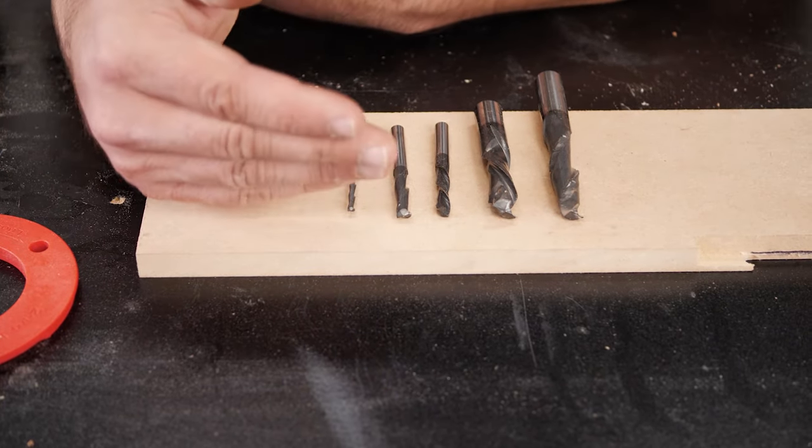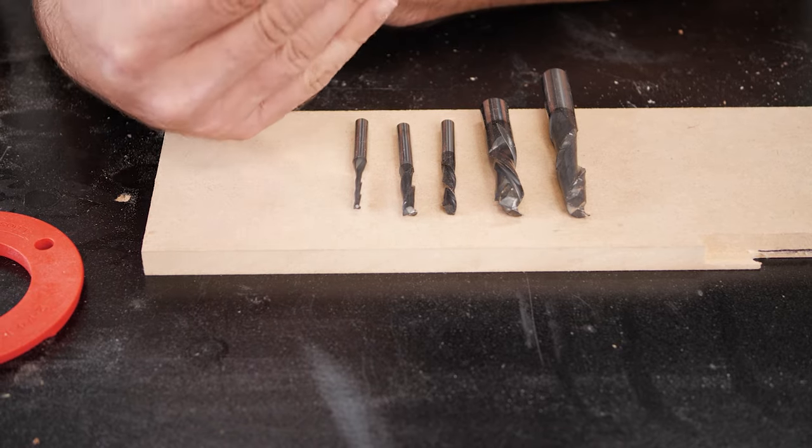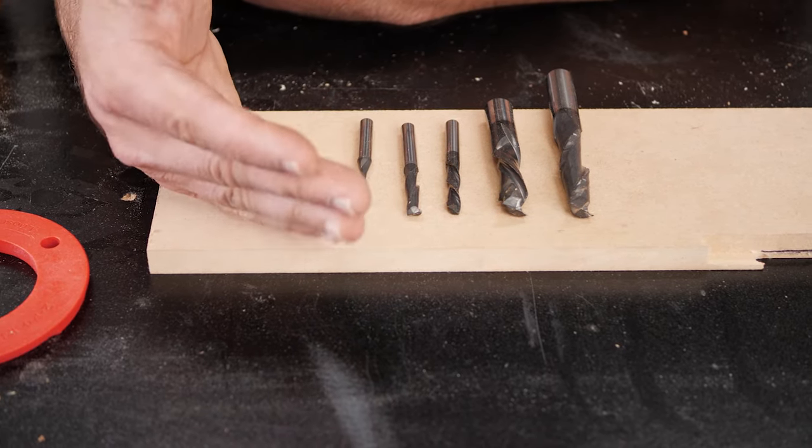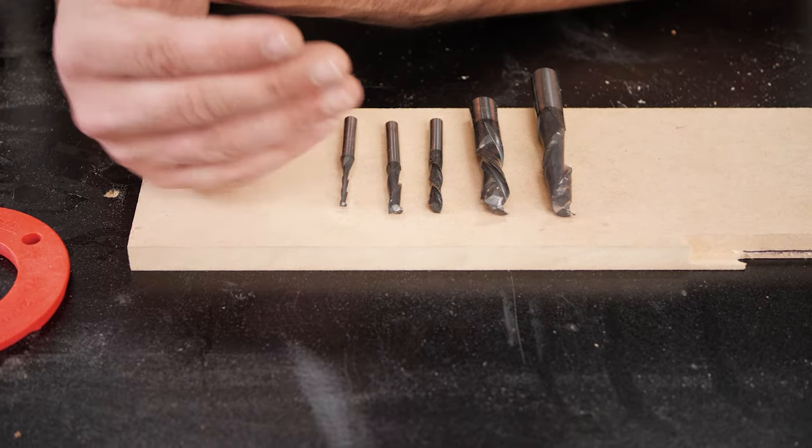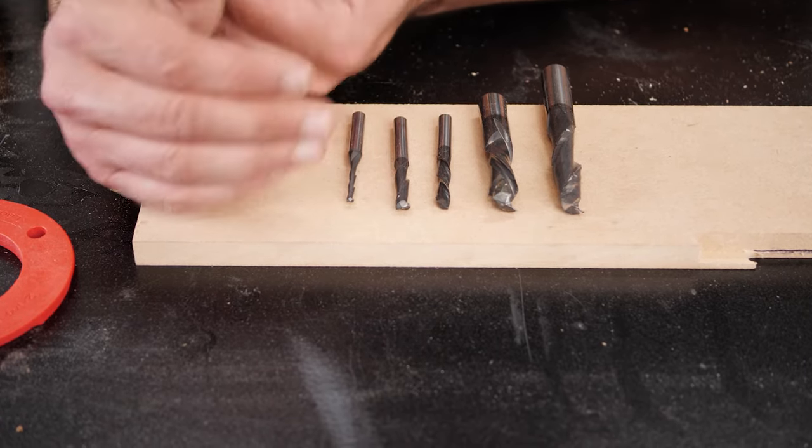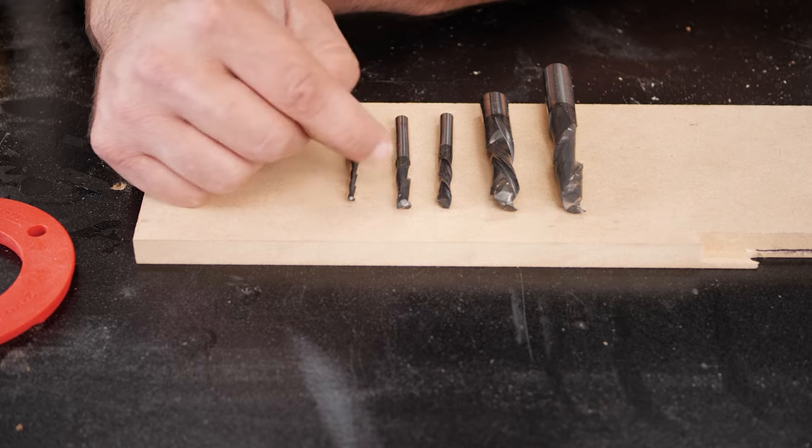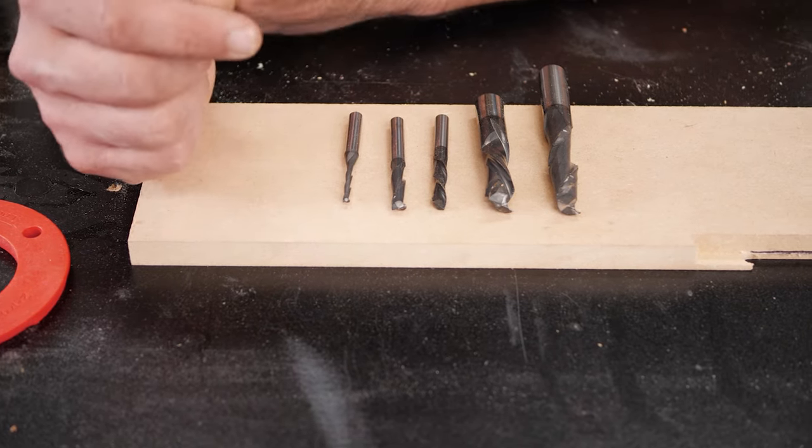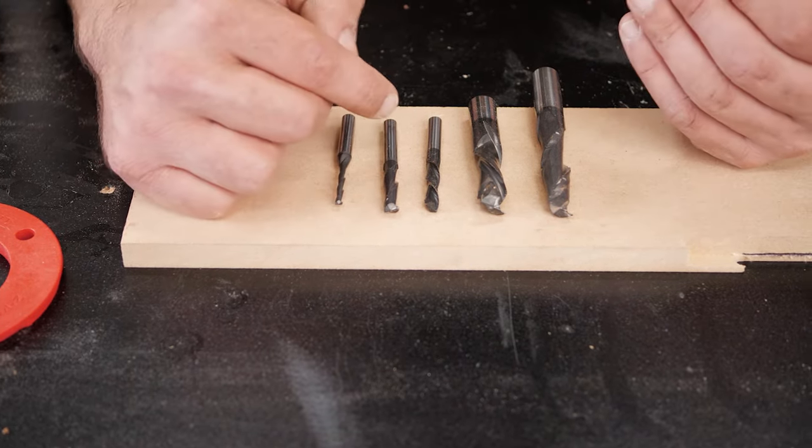Spiral bits clear chips out of the cut. One of the causes of burning when you're cutting a dado or groove is heat buildup. And if sawdust is staying in your groove, your router bit is not only working to cut the material, but it's working against all that sawdust that is compacted in there.